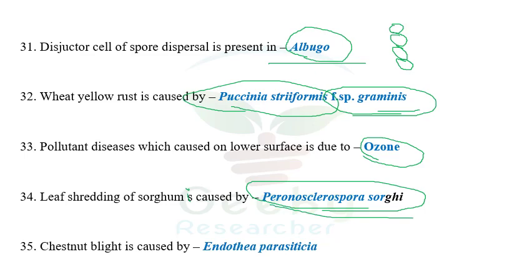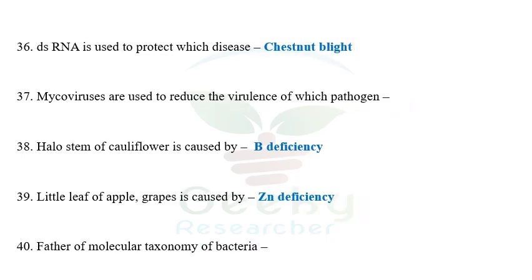The next question: chestnut blight is caused by Endothia parasitica, also known as Cryphonectria parasitica. Both names are correct — the current name is Cryphonectria parasitica and the old name is Endothia parasitica. If Cryphonectria parasitica is not in the options, choose Endothia parasitica. The next question: double-stranded RNA is used to protect against which disease? Among the options, chestnut blight — because in hypovirulence, double-stranded RNA plays a major role in reducing the virulence of the virus infecting chestnut.